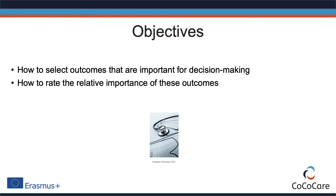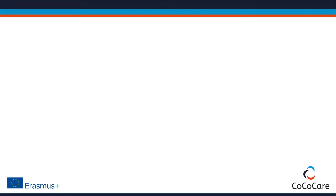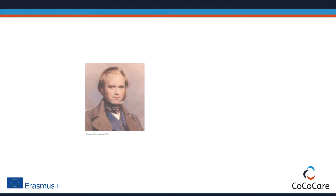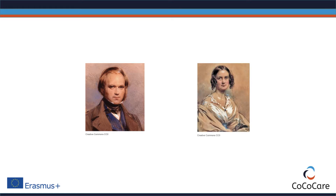To understand why weighing of outcomes is important, let's consider an example. At age 27, when Charles Darwin returned from his adventure on the HMS Beagle, he thought it was time to settle down. His cousin, Emma Wedgwood, seemed like the perfect catch.